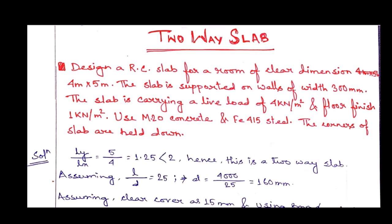In this video, I am going to design a two-way slab directly. The problem: Design an RC slab for a room of clear dimension 4 m × 5 m. The slab is supported on walls of width 300 mm, carrying a live load of 4 kN/m² and floor finish of 1 kN/m². Use M20 concrete and Fe-415 steel. The corners of the slab are held down.